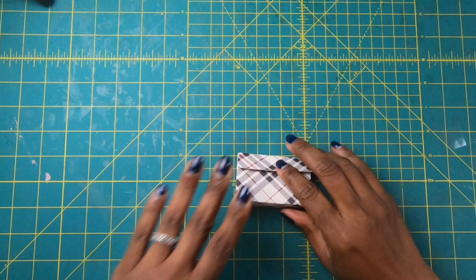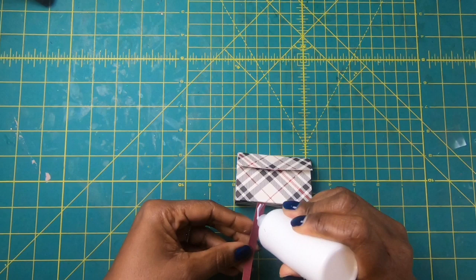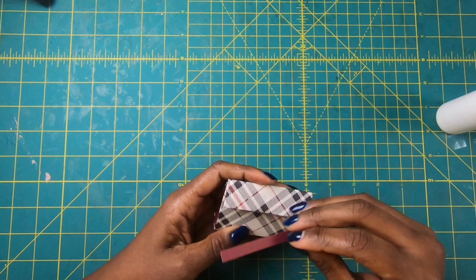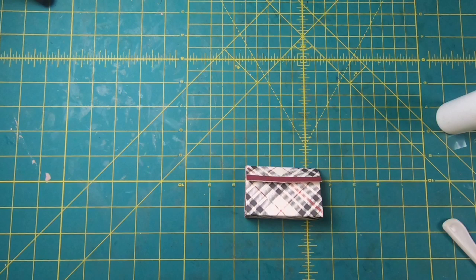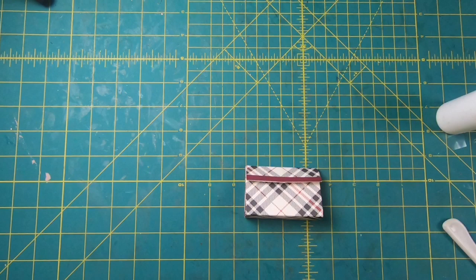And now I want to take a small strip of coordinating paper. And I am going to put some glue on it. Because I just want to break up the look of this purse and give it more of a purse look. I am just taking that small strip and placing it right here on the edge. And then I will come back with my bone folder and just smooth it down. And don't you think that looks more like a little purse now that I have added that strip.